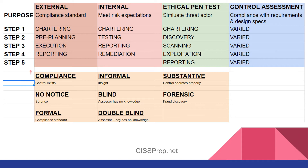External audits are done to measure compliance standards — consider this the ace card. Internal audits are done to meet risk expectations and are almost always informal — we'll consider this the king card, since it doesn't necessarily carry the same weight as the ace. But again, it depends on your organization's needs. The steps for each will be covered in more detail in the upcoming slides.